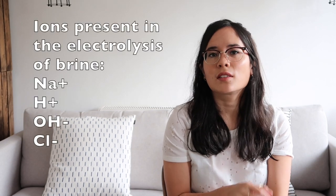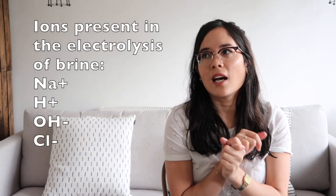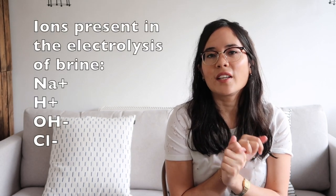Now let's look at the electrolysis of brine, or sodium chloride in aqueous solution, which means there are also hydrogen ions and hydroxide ions present. It uses a specialist diaphragm cell which separates all the solutions. You don't need to know too much about that, but you do need to work out what substance will discharge at each electrode.